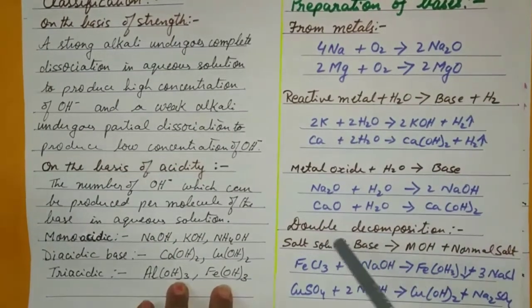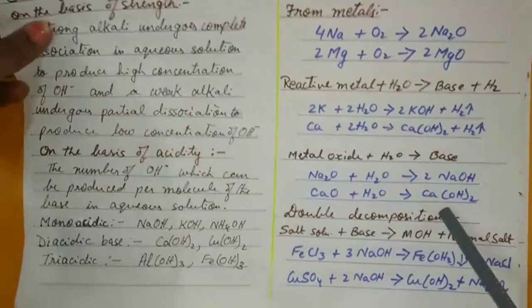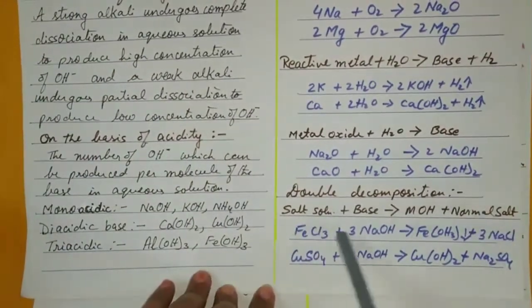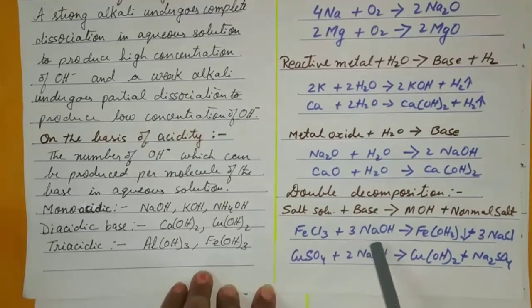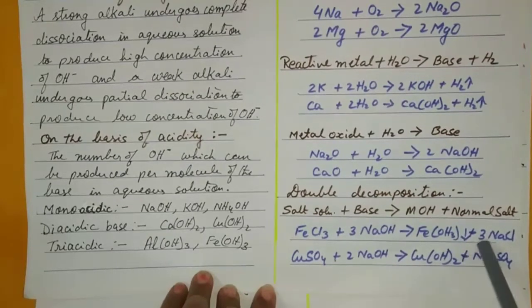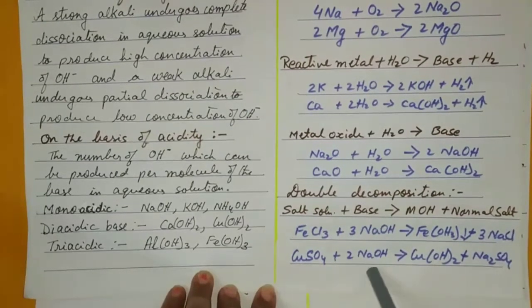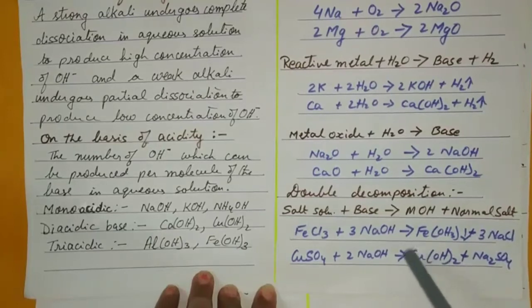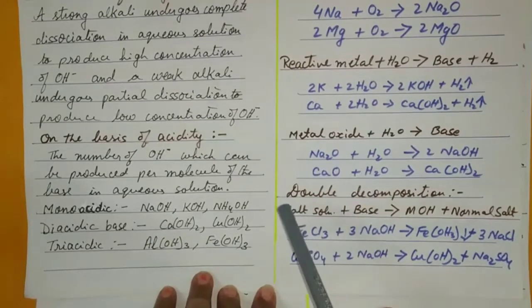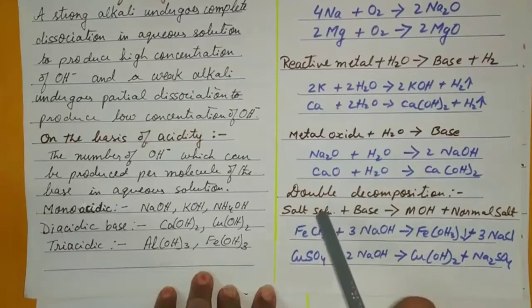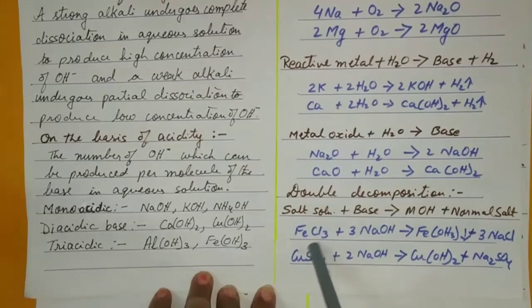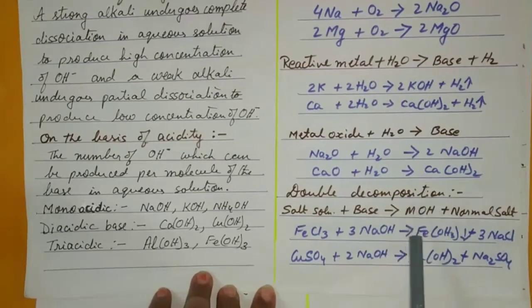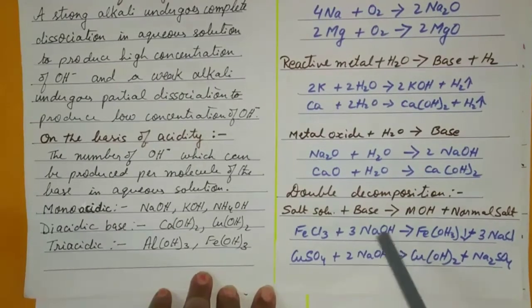There is also a method of double decomposition by which a base can be formed — that is, a salt solution reacted with a base. Ferric chloride and sodium hydroxide gives ferric hydroxide and sodium chloride. Copper sulfate and sodium hydroxide gives copper hydroxide and sodium sulfate. In these cases you get precipitates — ferrous hydroxide gives dirty green, ferric hydroxide gives reddish brown, copper hydroxide gives pale blue precipitate.